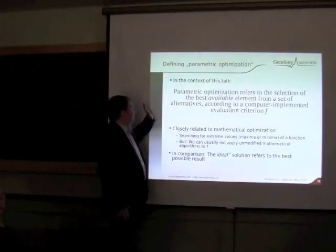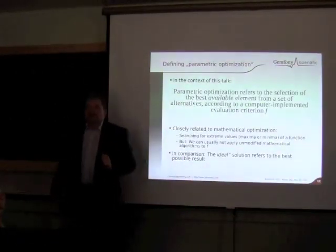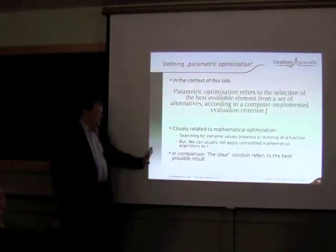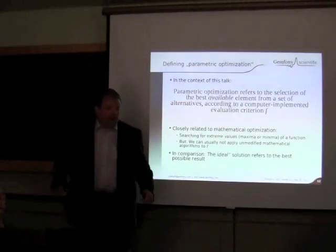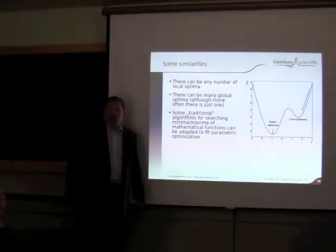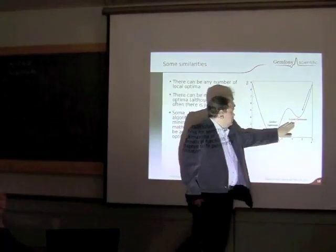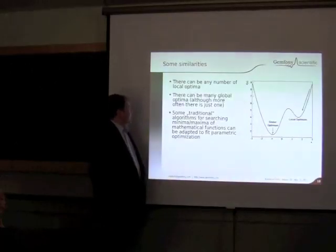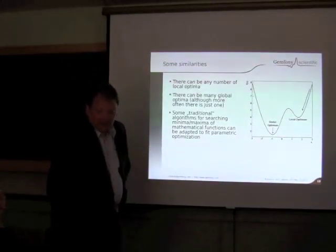One important thing here is the phrase 'best available element from a set of alternatives,' because almost always the result you will get will be limited by the amount of compute power available to you and the size of the problem. You will almost never get the ideal solution — the best theoretically possible result — at least for realistic and large problems. There can be local optima and usually one global optimum in your evaluation criteria, but there can be multiple global optima as well. Some algorithms for searching minima and maxima of mathematical functions can be adapted to parametric optimization.